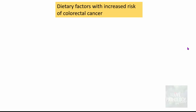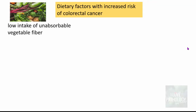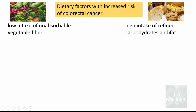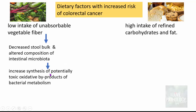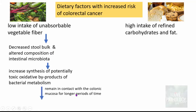The dietary factors implicated with increased risk of colorectal cancer are: one, low intake of unabsorbable vegetable fiber, and two, very high intake of refined carbohydrates and fat. Low intake of unabsorbable vegetable fiber results in decreased stool bulk and altered composition of intestinal microbiota, leading to increased synthesis of potentially toxic oxidative byproducts of bacterial metabolism. Because of decreased stool bulk, there is decreased motility, and thus these toxic oxidative byproducts remain in contact with the colonic mucosa for longer periods of time, resulting in carcinogenesis.